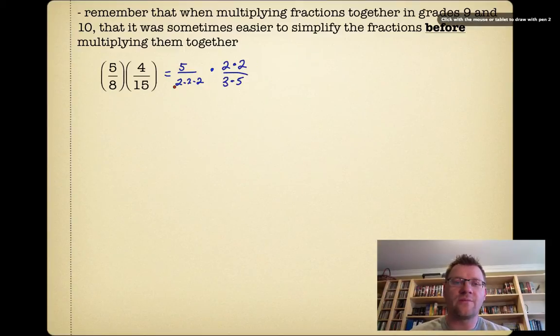What we did was simplify by canceling out any factor that appeared in the top and the bottom. So that 5 and that 5 canceled out. There's two 2s up here that would cancel out with two 2s on the bottom. What we ended up with was everything canceling out on the top, giving you a 1, and then just 2 times 3 on the bottom, which is 1/6. We were able to multiply these two fractions together without actually having to multiply big numbers together and then simplify at the end.